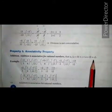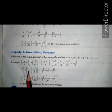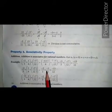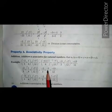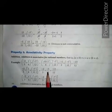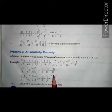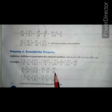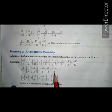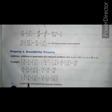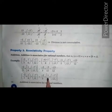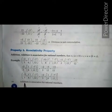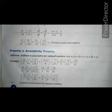For the right hand side, a plus bracket b plus c: on solving b plus c we get minus 5 upon 12, and then adding a we get minus 13 upon 12. On both sides we get minus 13 upon 12, so left hand side equals to right hand side. Thus, (a plus b) plus c equals to a plus (b plus c), meaning addition is associative for rational numbers.